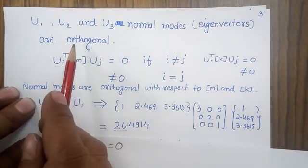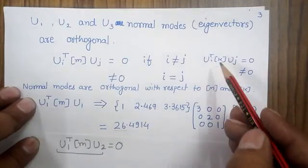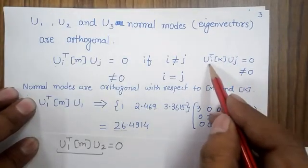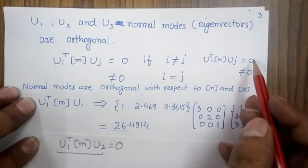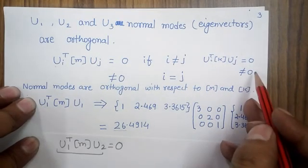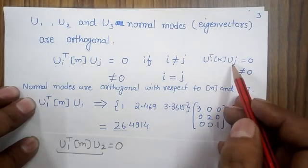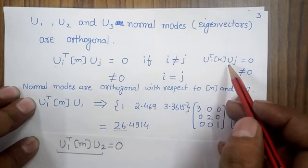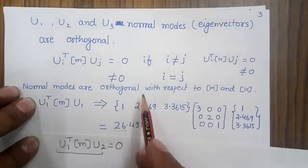The same logic is applicable for the stiffness matrix. If I multiply two normal modes with the stiffness matrix, I may get either zero or non-zero depending on the choice of normal modes. If i equals j, I get a non-zero value; if i is not equal to j, I get a zero value. So the normal modes are orthogonal with respect to both the mass and stiffness matrices.